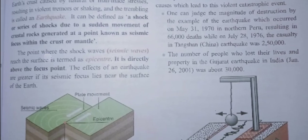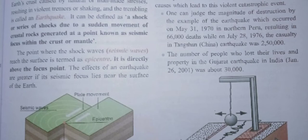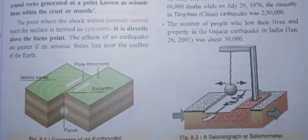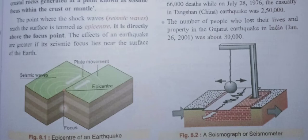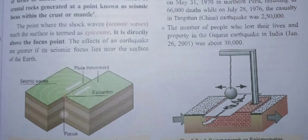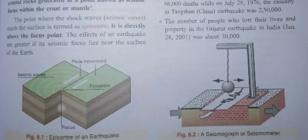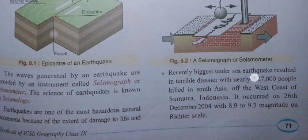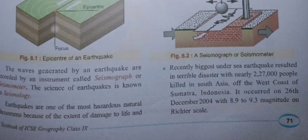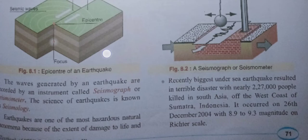The number of people who lost their lives and property in the Gujarat earthquake in India, which happened on January 26th, 2001, was about 30,000. The recently biggest undersea earthquake resulted in a tsunami disaster with nearly 2,27,000 people killed in South Asia, off the west coast of Sumatra, Indonesia.